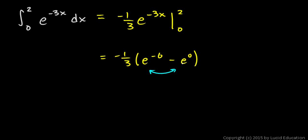And this e to the 0, of course, is just 1. So let's write this as positive 1 third times 1 minus e to the negative 6.